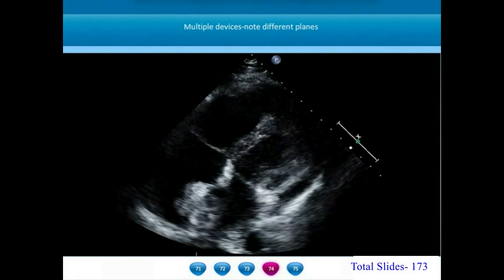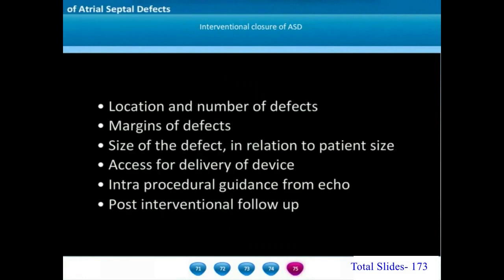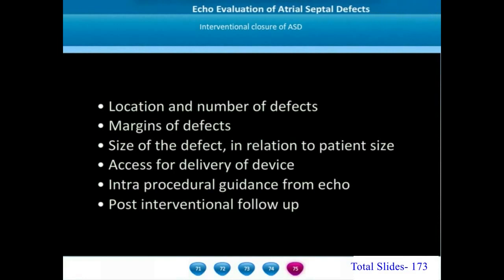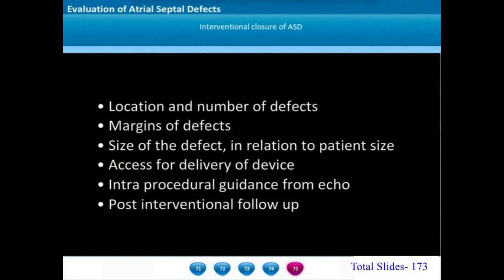In this apical four-chamber view we can notice the two devices at two different planes with an angulation between them. An interventional closure of an ASD will depend on: the location of the defect, the number of defects, the margins of the defect, the size of the defect in relation to the size of the patient, and whether there is a well-developed inferior vena cava for device delivery. We need to identify IVC anomalies like interrupted IVC. Echocardiogram also helps in intra-procedural guidance and post-device follow-up.